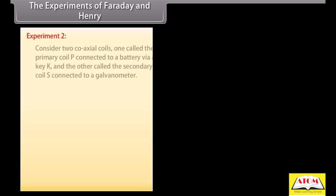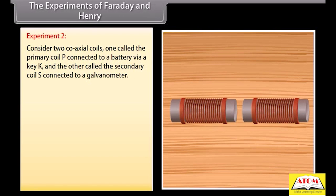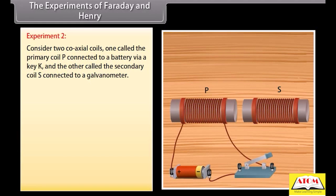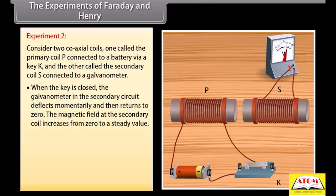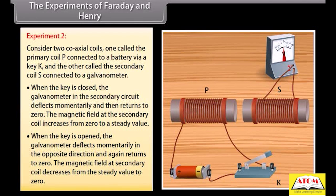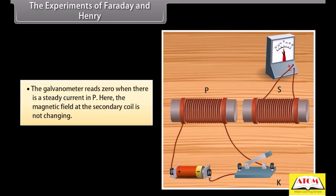Experiment 2: Consider two coaxial coils — the primary coil P connected to a battery via a key K, and the secondary coil S connected to a galvanometer. When the key is closed, the galvanometer deflects momentarily then returns to zero, as the magnetic field at the secondary coil increases from zero to a steady value. When the key is opened, the galvanometer deflects momentarily in the opposite direction and returns to zero. The galvanometer reads zero when there is a steady current in P, as the magnetic field at the secondary coil is not changing.